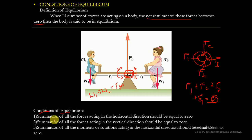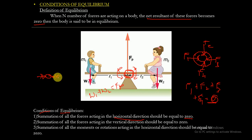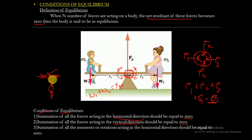There are three conditions of equilibrium. The first is that the summation of all forces acting in the horizontal direction should be equal to zero. If I apply a force in one direction and another force in the opposite direction, these two forces cancel and the body is in equilibrium. The second condition is that the summation of all forces in the vertical direction should also be equal to zero.